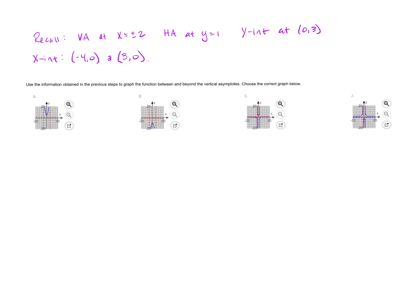To choose the correct graph, we need to recall all the information we've found: vertical asymptotes at x equals plus or minus 2, horizontal at y equals 1, y-intercept at 0 comma 3, and x-intercepts at negative 4, 0 and 3, 0. A shows no x-intercepts, so we can eliminate A. Same with B. So C and D are our only real candidates. I'm going to zoom in.